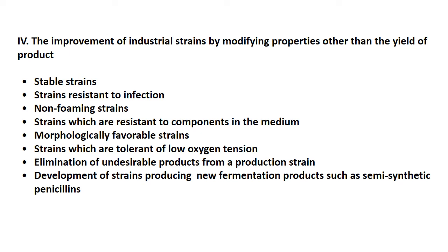Industrially important microorganisms also need to be improved in properties other than product yield. The organism should be improved for increased stability, resistance to infection by bacteriophages, decreased foaming during fermentation, resistance to components in the medium, and morphologically favorable strains can be obtained. We can also improve the tolerance of strains to low oxygen tension, modify organisms so they do not produce undesirable products, and we may modify organisms to produce new fermentation products such as semi-synthetic penicillin.